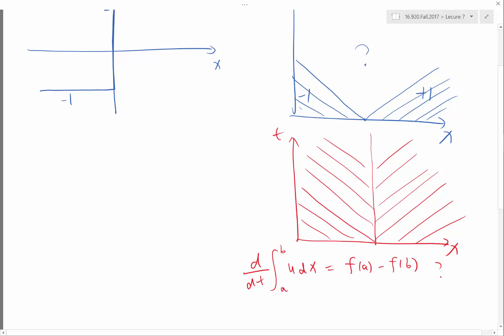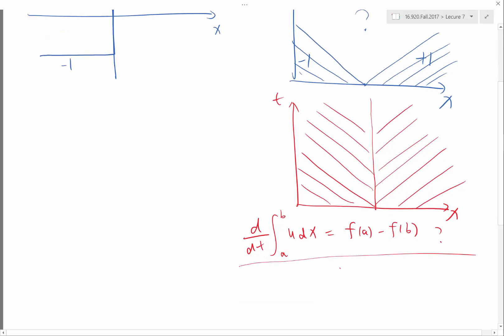No? Why? We have some information coming out of the shock. Yes, we have some information come out of the shock. But does this satisfy this differential equation? What is f(a)? What is f? f at any point x is equal to half of u squared at x, right?